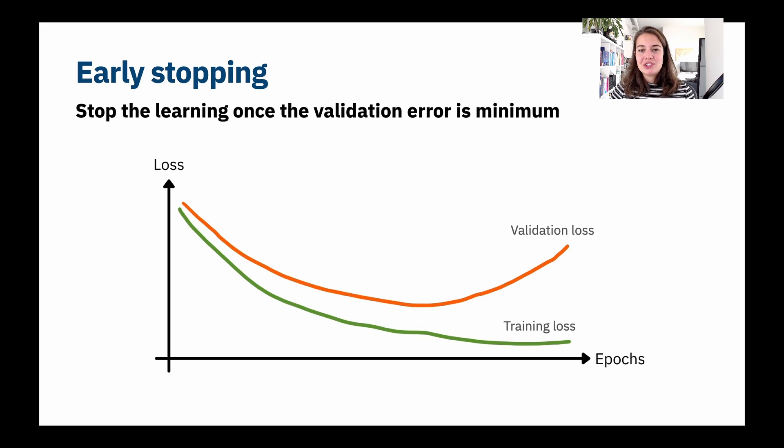Okay, so the last regularization technique that is about simplifying the model is early stopping. And it's very simple, as simple as it sounds. We have the epochs and we have the loss. The more epochs, the more times we show our data to the network, the lower the training loss gets.